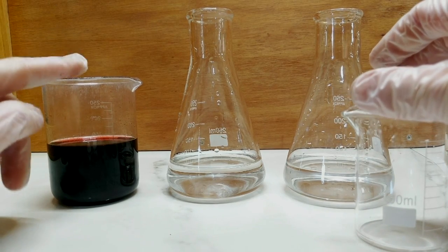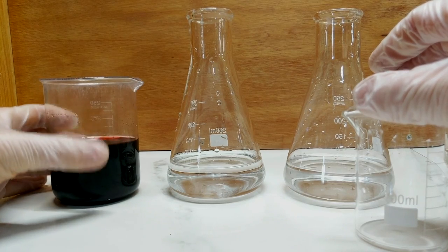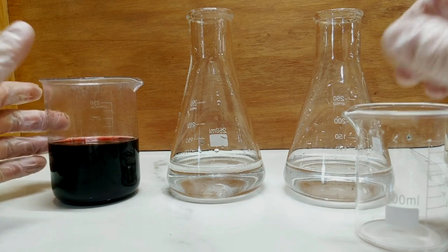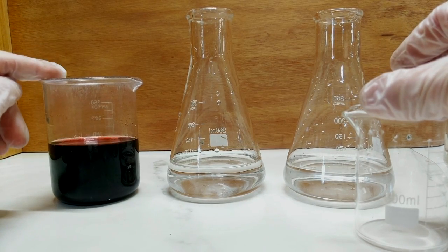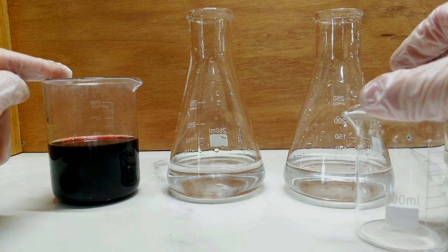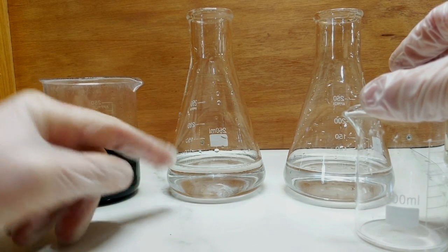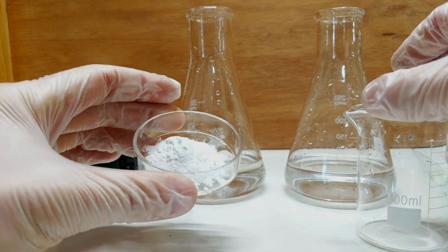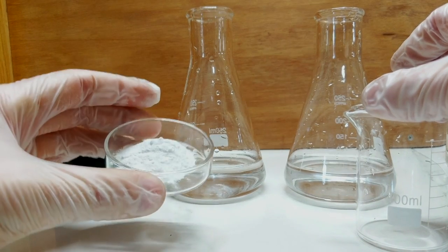So what I have here in the beaker is a fairly concentrated solution of cobalt chloride. There was 30 grams of carbonate went in there. Basically what I'm going to do is take a small amount of my concentrated cobalt chloride solution and add it to an Erlenmeyer flask that I'm going to put some monosodium phosphate into.